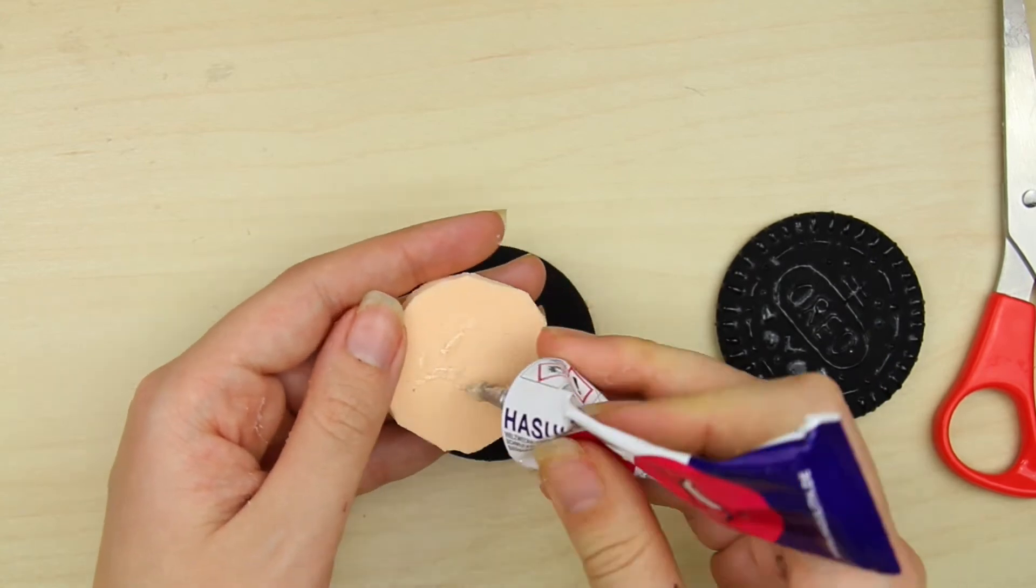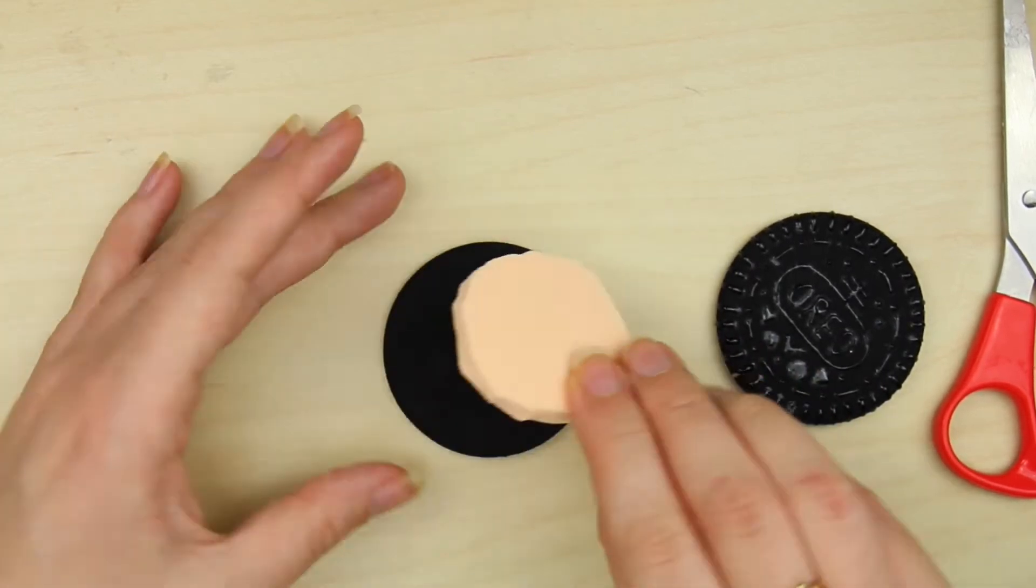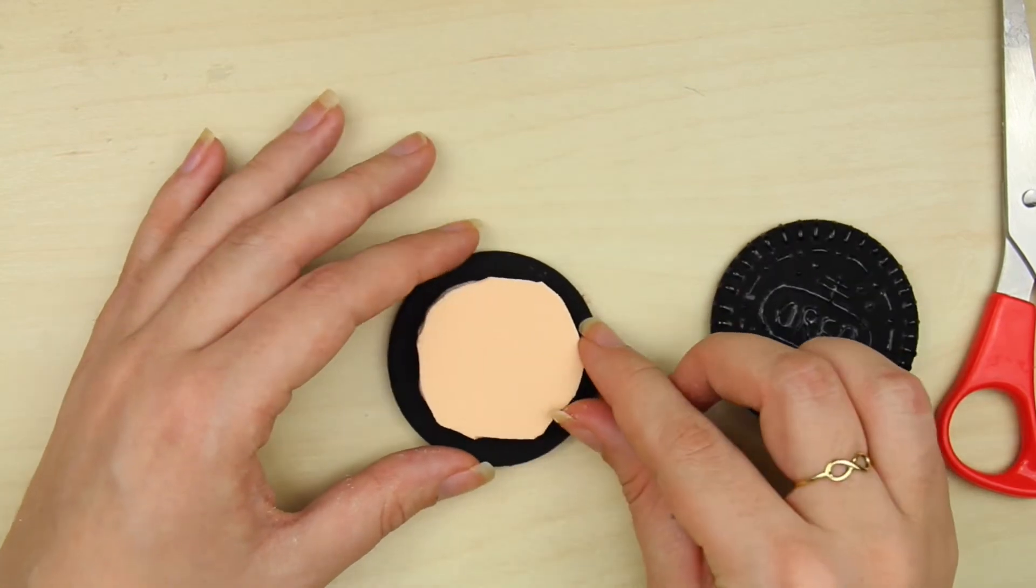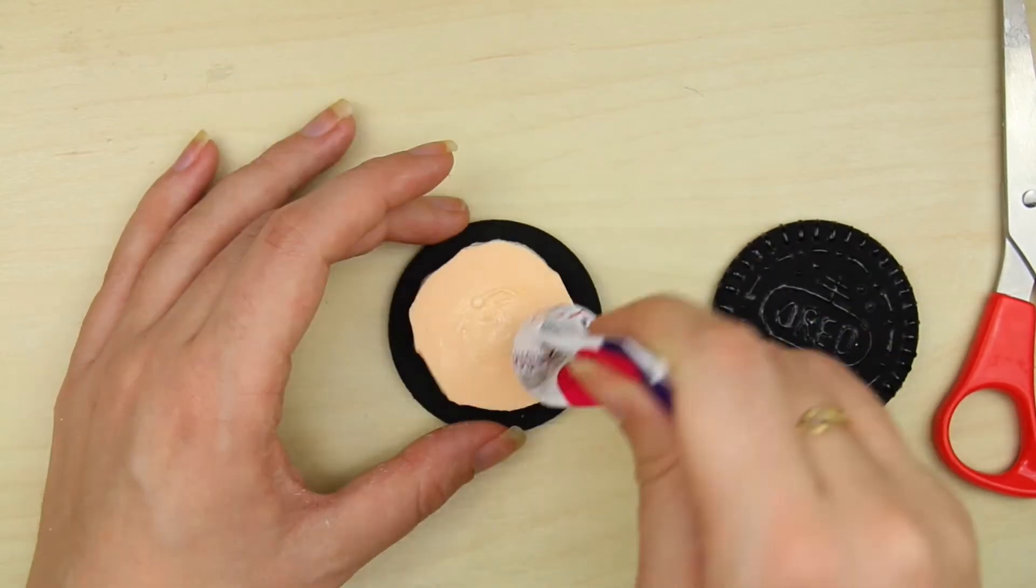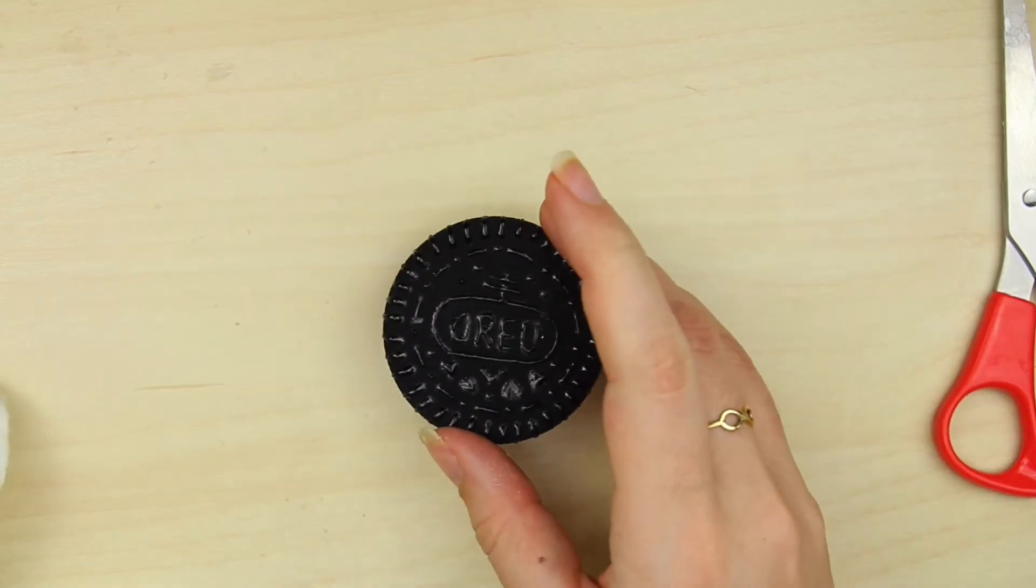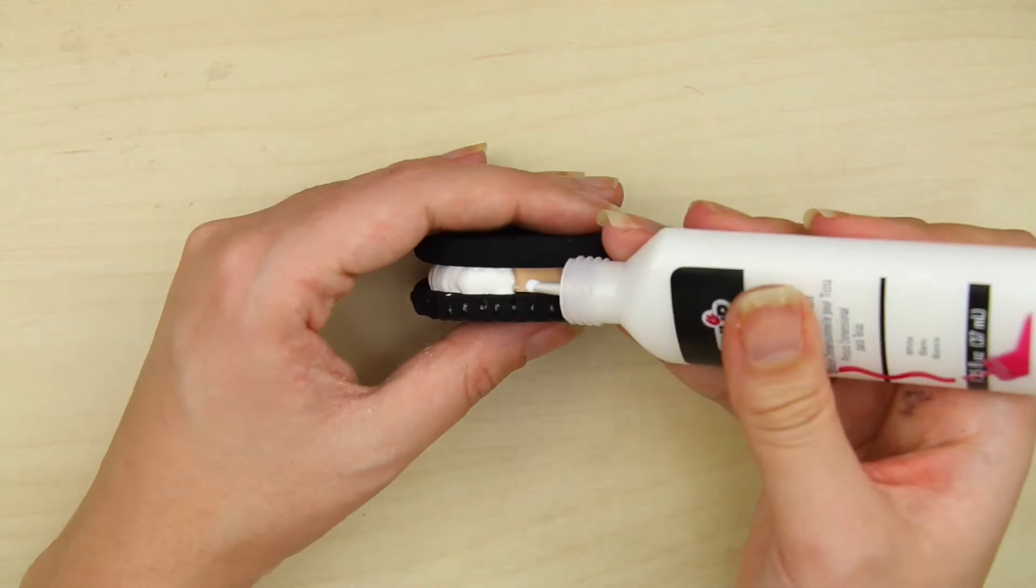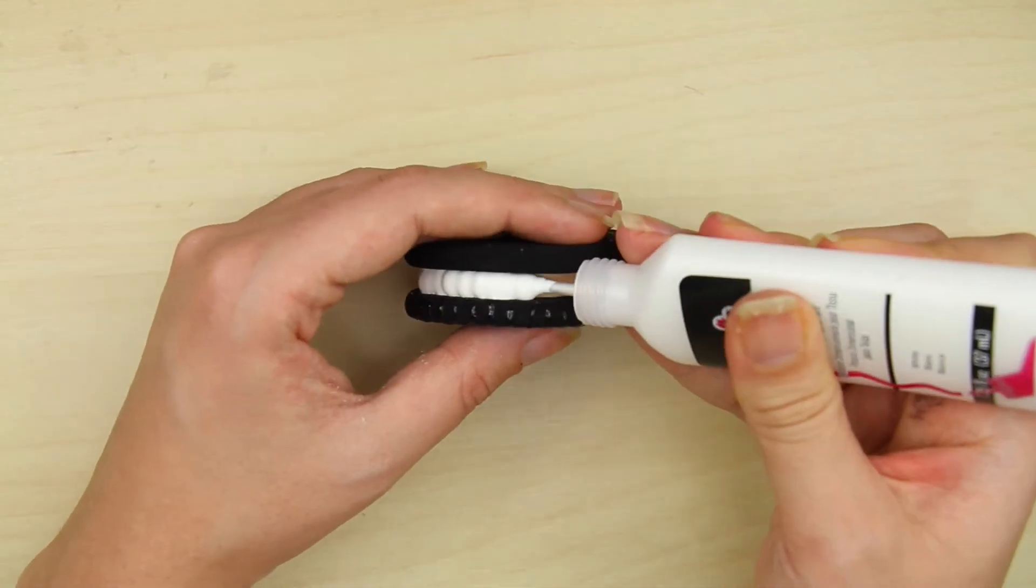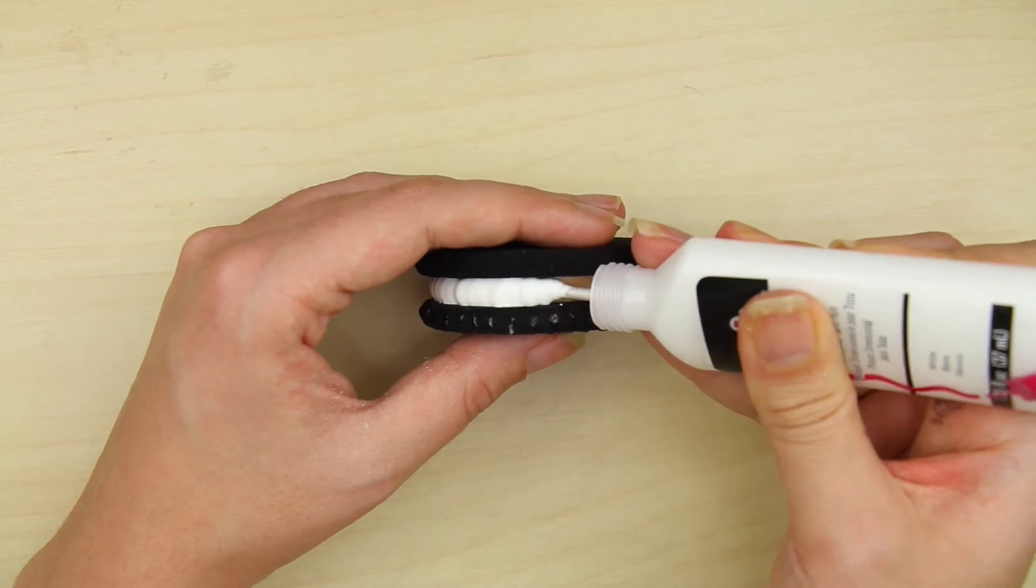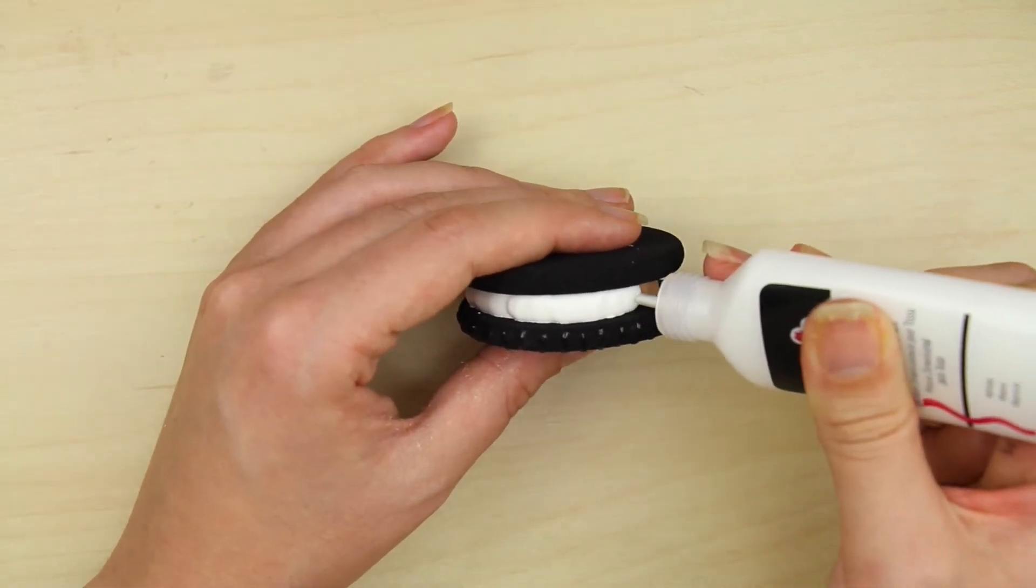Now glue it into place. With white puffy paint, start filling in the sides to hide the sponge in the middle. By the way, not kidding, I felt like I was a pastry chef.